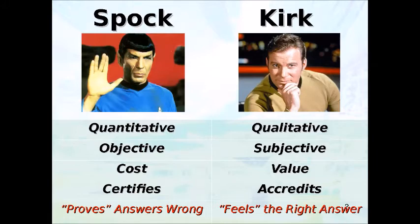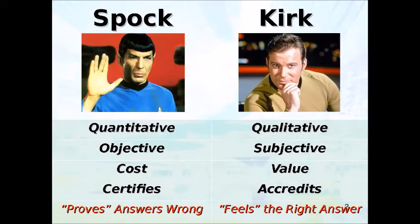Spock can quantify or objectively look at an answer. Costs are very quantifiable — I can show you a receipt for what I paid for the Vulcan harp. But Kirk can tell you what he feels it's worth. Certification means to be very certain, so Spock could certify that a system has 16 gigs of RAM. Accreditation — 'accred' from the Greek meaning to believe — means Kirk would accredit a solution, deciding whether 16 gigs of RAM is appropriate for a particular solution.